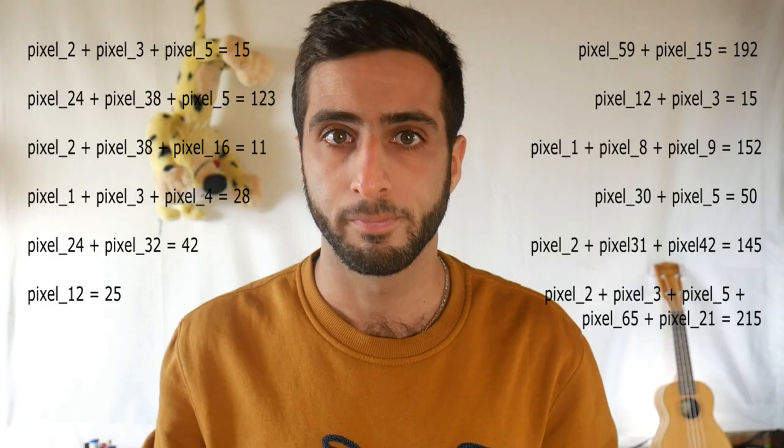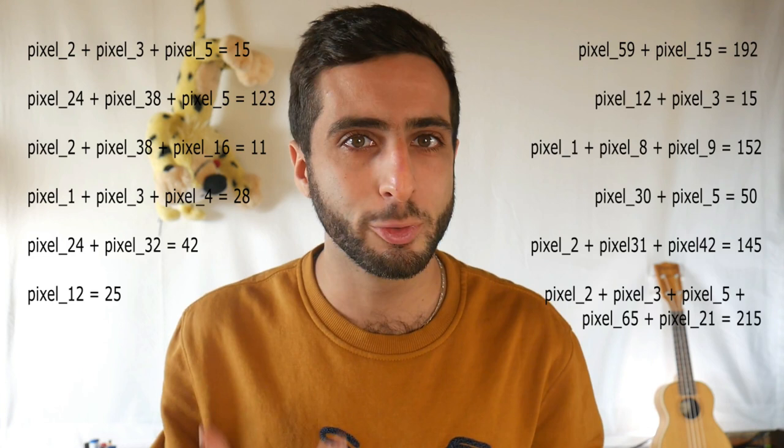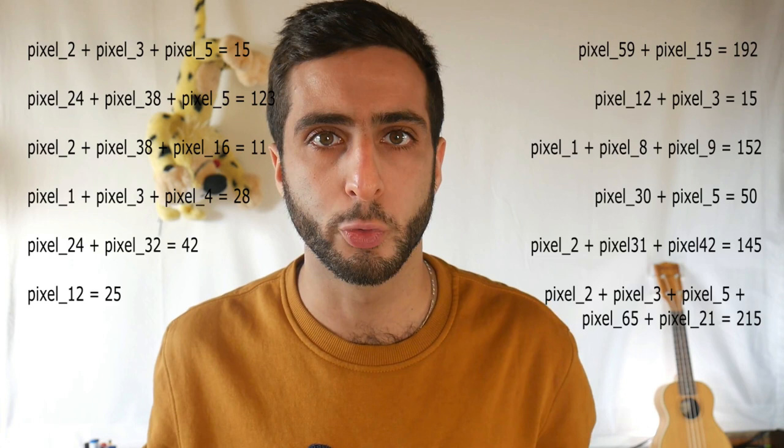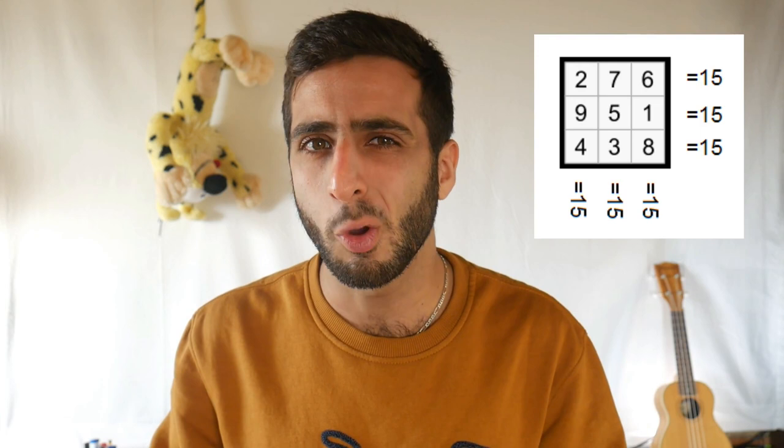Donc pour reconstruire notre image, on n'a plus qu'à résoudre ce système. Reconstruire l'image, ça veut donc dire trouver une valeur pour chacun des pixels, telles que toutes ces additions sont justes. C'est un peu comme si vous deviez résoudre un carré magique — vous savez, ce jeu où vous devez remplir des cases, et où la somme de chaque ligne et de chaque colonne doit être égale à une certaine valeur. Et bien là, c'est un peu pareil.